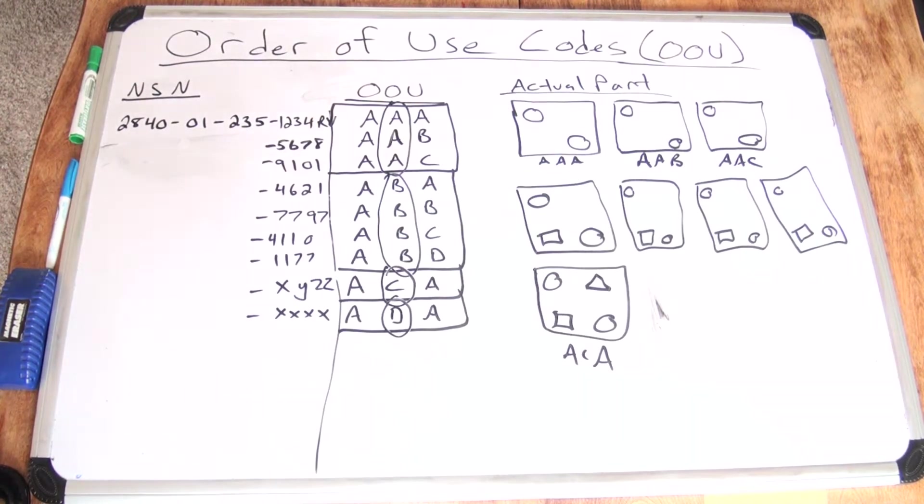First let me describe my chart here. You have the NSN, the national stock number, and I abbreviated the rest down here but just to give an example. You have multiple stock numbers but they're all interrelated. They're all part of the same order of use structure.